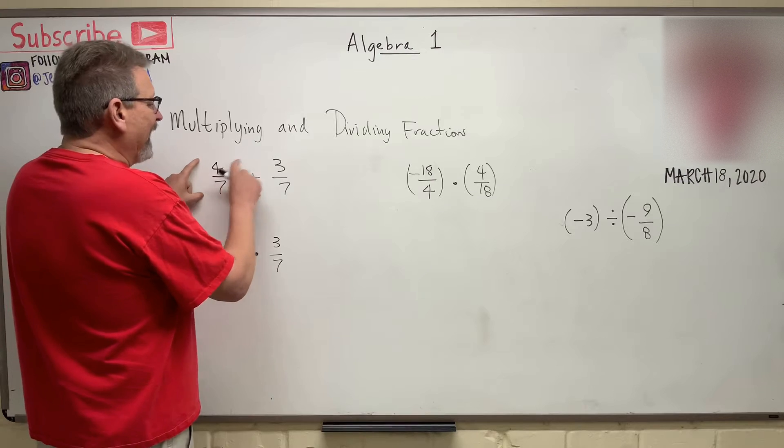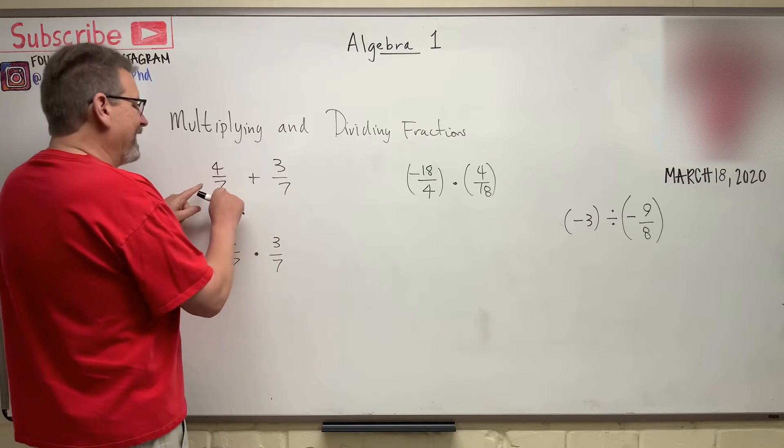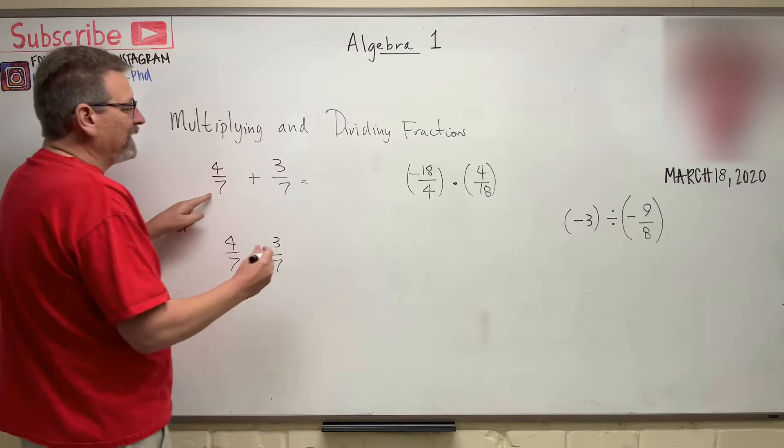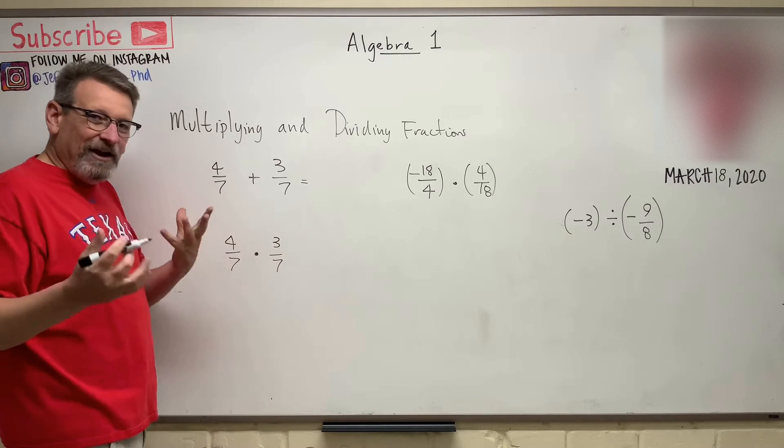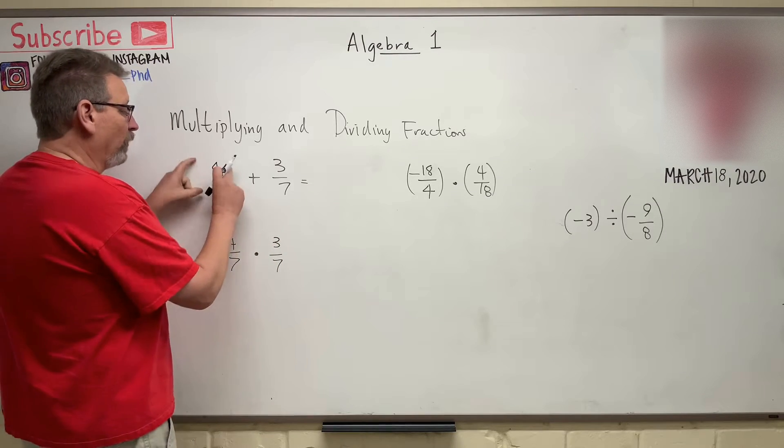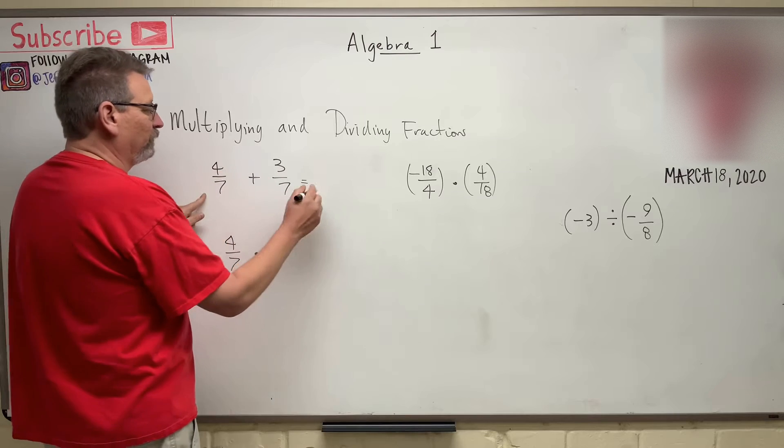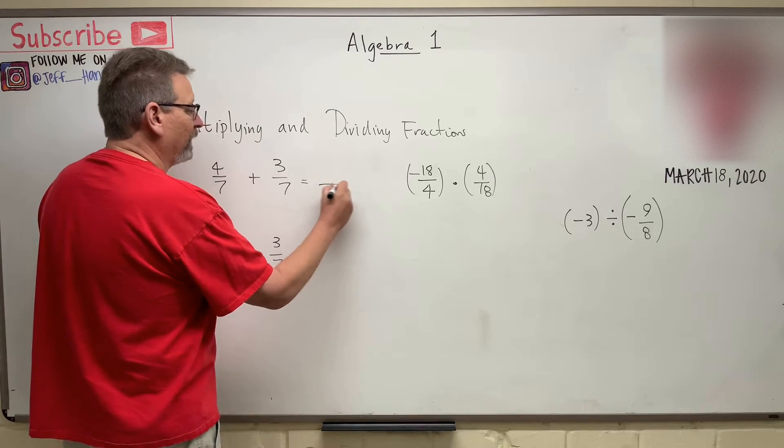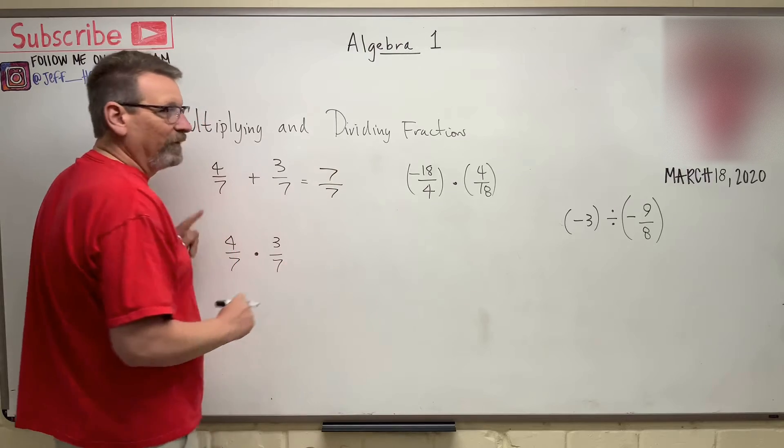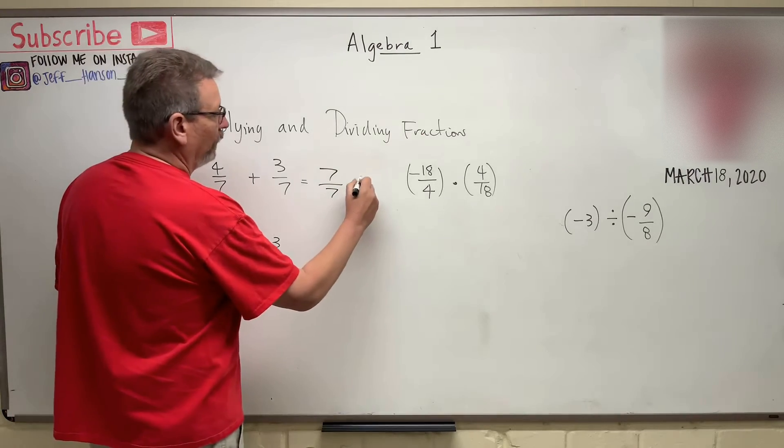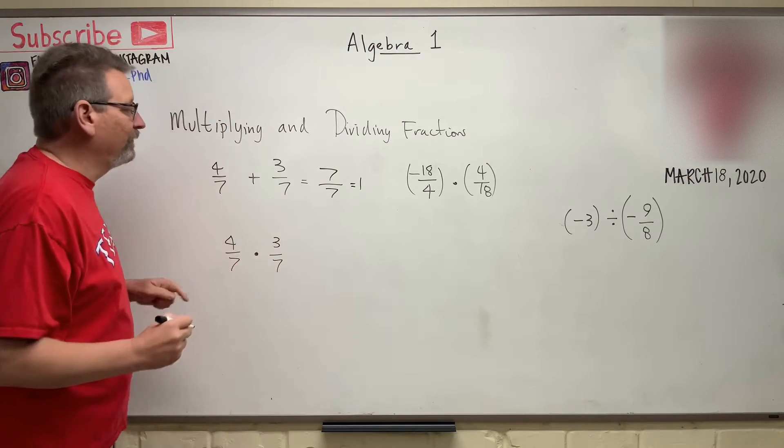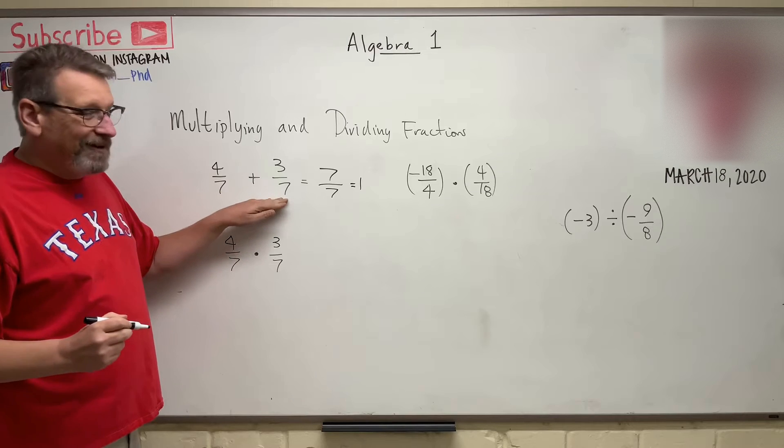And when we added two fractions together, we had to have common denominators. And when we added those two together, the denominator didn't change. So 4/7 plus 3/7 was, right? There's a 7 on the bottom and then 4 plus 3, there's a 7 on the top. Now that actually turns into 1 there, doesn't it? 7 over 7, but the denominator doesn't change.